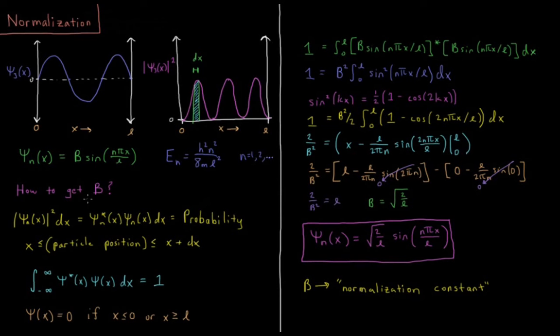So our question for this video is how do we get b? We said that psi star psi, or the absolute value of psi squared times dx, is the probability that the position of the particle is between x and x plus dx.